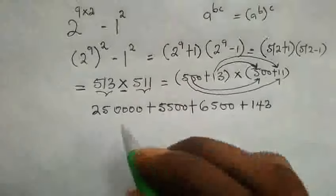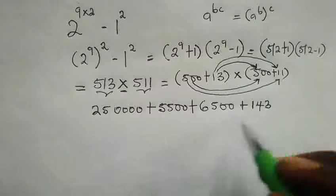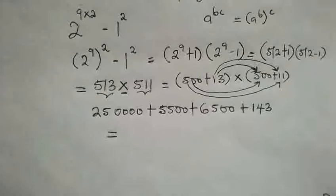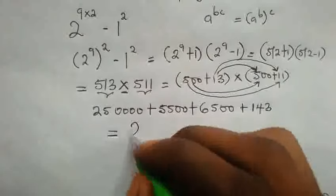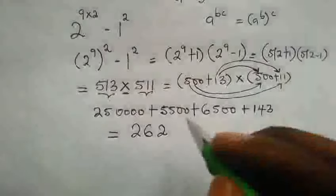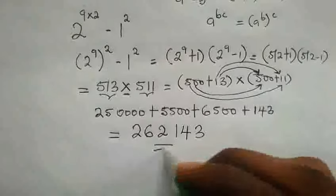Now let us add this together. If you carefully add these numbers together, this is going to give you 262,143, and this is the final answer.